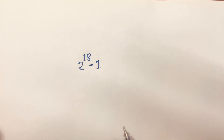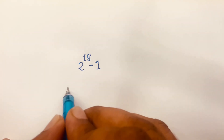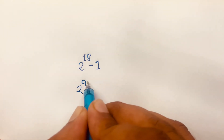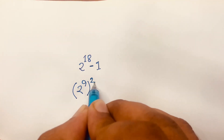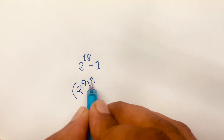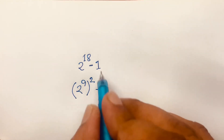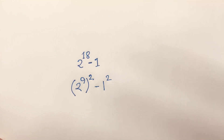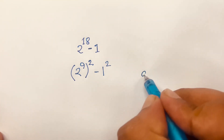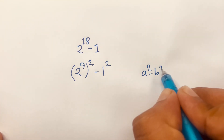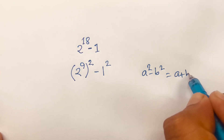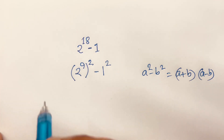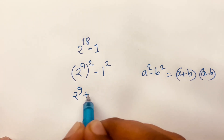How to solve 2 to the power 18 minus 1. First, I can write 2 to the power 18 as 2 to the power 9, bracket, power 2 — since 9 times 2 equals 18 — minus 1 squared. Now you know that a squared minus b squared equals a plus b times a minus b. According to these rules, I can write 2 to the power 9 plus 1, times 2 to the power 9 minus 1.